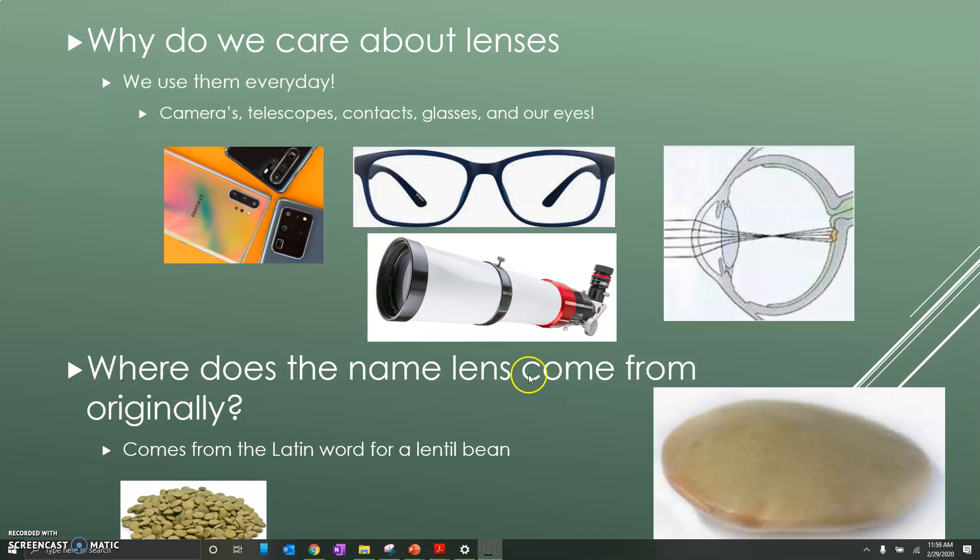Where does the name lens come from originally? It comes from the Latin word for lentil bean. You can see a little pile of lentil beans over here and you can see this is one lentil bean and you can kind of see it looks like a lens. So that's where the name comes from and this is why they're important to us.